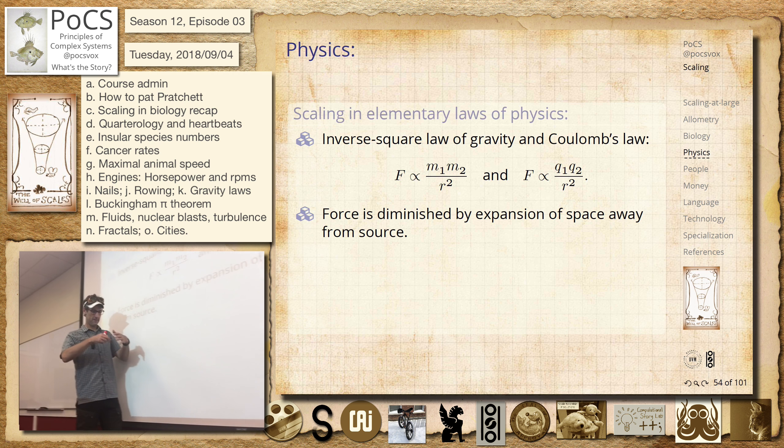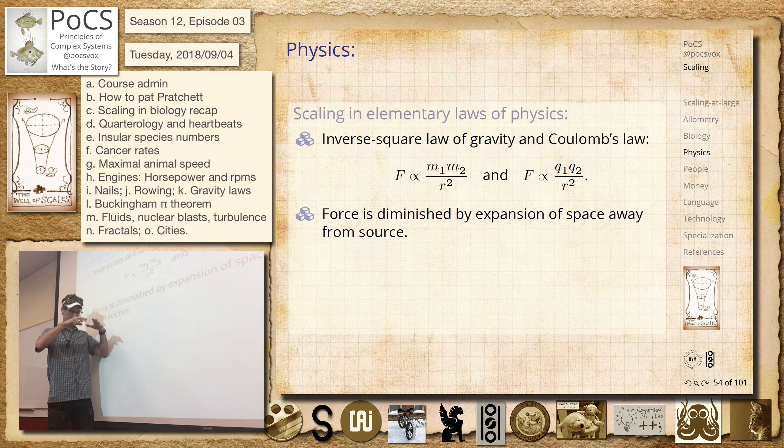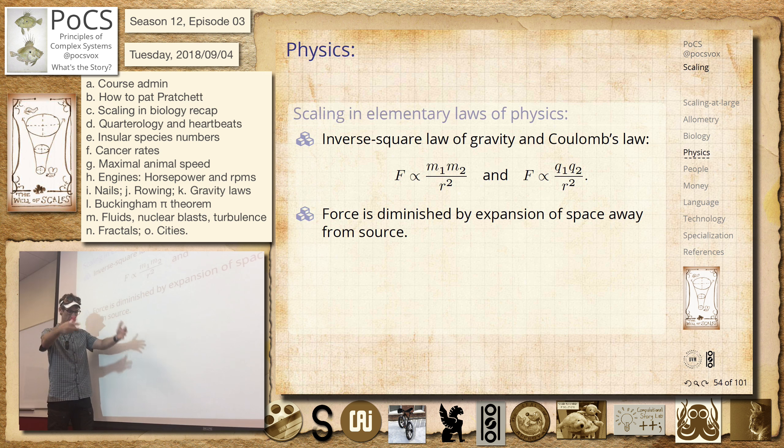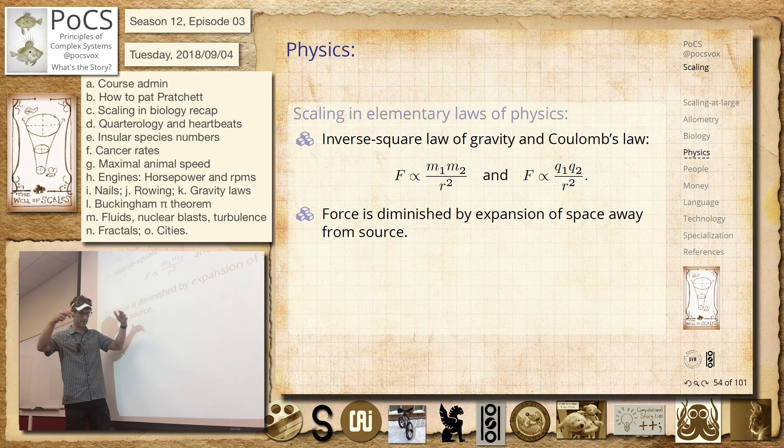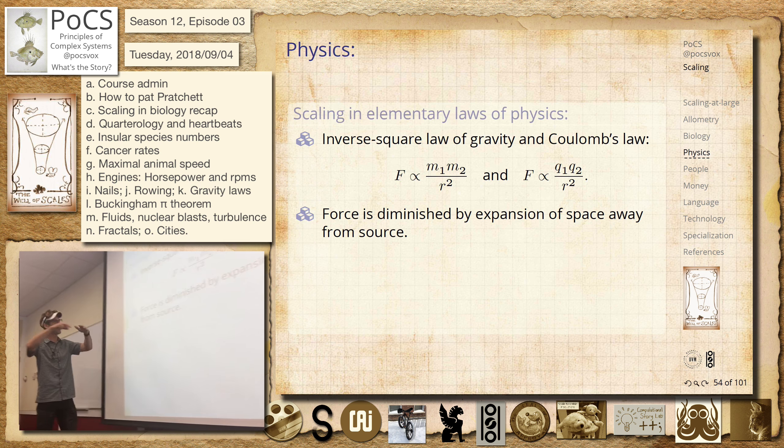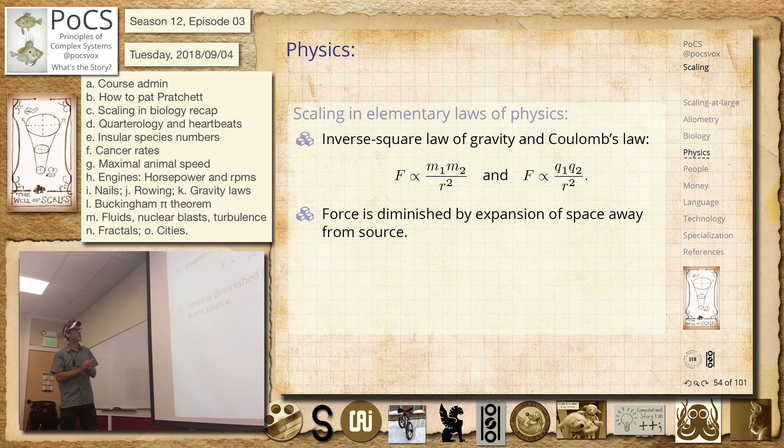And there's a sense here that that force as it goes out is equally partitioned around the surface of the sphere that's at a distance that has a radius r. So as it goes out, it's still there, but it's weakened because it's being spread out over more space.